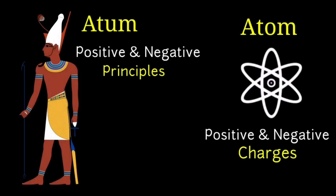The ancient Egyptian god Atum had positive and negative principles; the atom has positive and negative charges — and that is because Atum is the atom. It is the personification of the atom. The Egyptians, the Babylonians, the Greeks, the Romans, the Canaanites, the Assyrians — these ancient civilizations worshiped science.